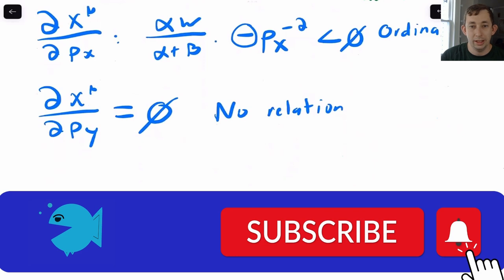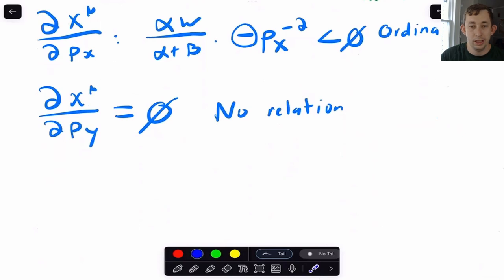So again, this is a really quick way to show what type of goods you're dealing with in a utility maximization problem. If you've already done the hard work to find Marshallian demand, you can use these elasticities to help tell you if two goods are complements or substitutes, if a good is ordinary, whether or not a good is normal or inferior. So hopefully this is a really quick tip that just helps you out.